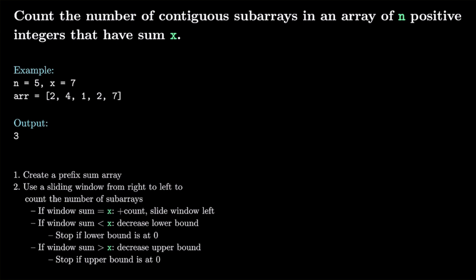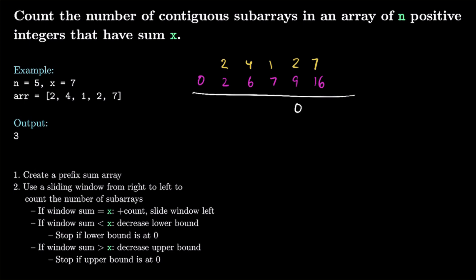Let's walk through the example using these steps. We first create our prefix sum array from [2, 4, 1, 2, 7]. Starting with 0, we get: 0, 2, 6, 7, 9, 16. This pink area is our sums array. Now we slide our window from left to right, starting with both the upper and lower bounds at the end. The lower bound is exclusive and the upper bound is inclusive, so we start covering the last element — the range gives us 16 minus 9, which is 7, exactly what we wanted.